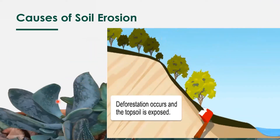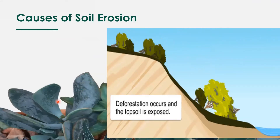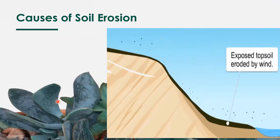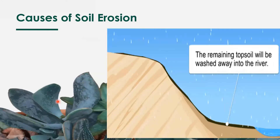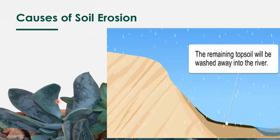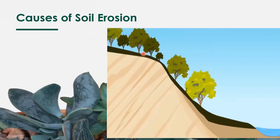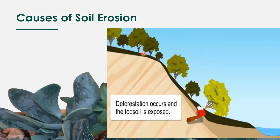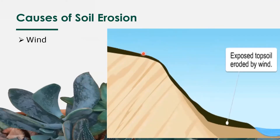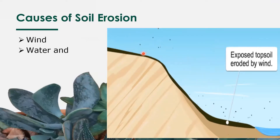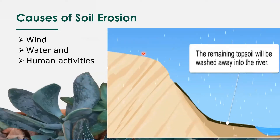I am going to talk about the causes of soil erosion, and then explain how we can prevent it. The causes of soil erosion are wind, water, and human activities.